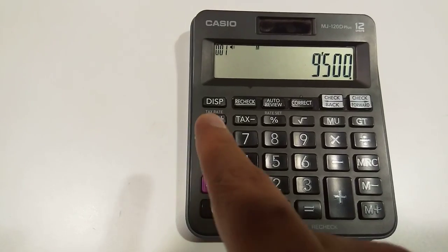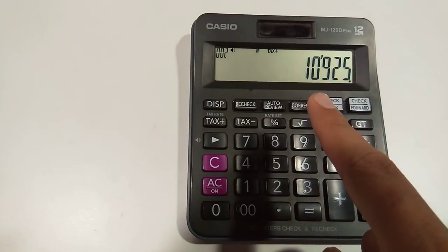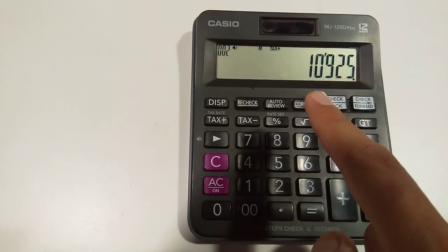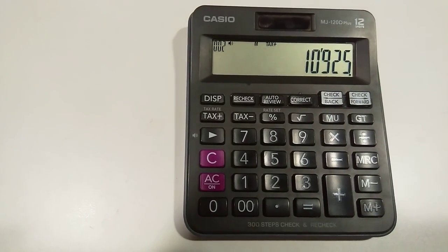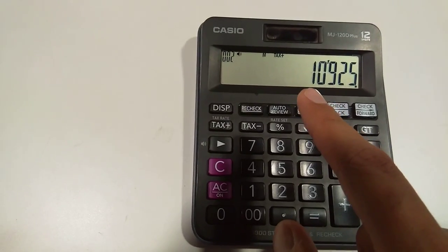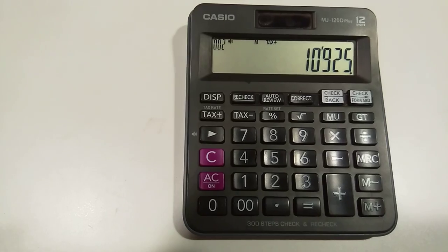So it's very easy. Just press 9500 and then press tax plus button. So the total amount you have to pay to him including tax will be 10,925. So the product rate was 9500. After 15%, the product rate will be 10,925.